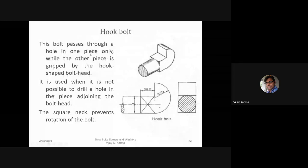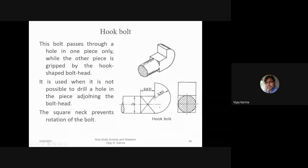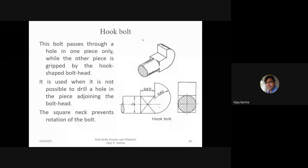The hook bolt passes through a hole in one piece only, while the other piece is gripped by the hook-shaped bolt head. It is used when it is not possible to drill a hole in the piece being joined. The square neck prevents rotation of the bolt. Options include a J-hook or a U-hook. For example, in a tin shed containing a pipe, a hole is drilled in the sheet and the bolt is taken through it, then the nut is screwed on.